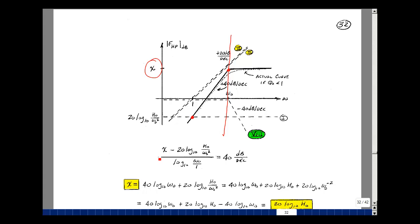So the rise over the run would be x, this point, minus this point, which is 20 log base 10 of H naught over omega naught squared, divided by the log of omega naught, divided by 1. And that's got to be equal to plus 40 dB per decade. And now I can solve for x.